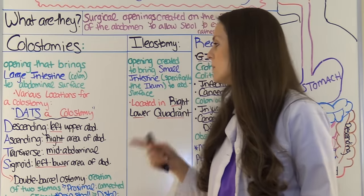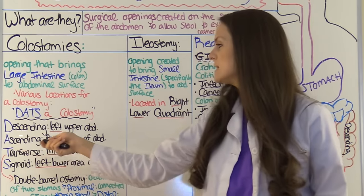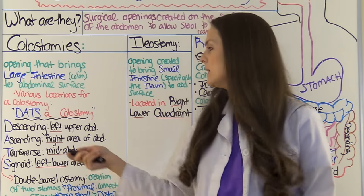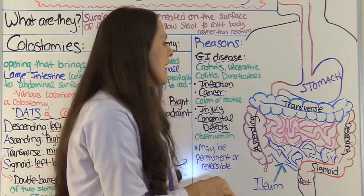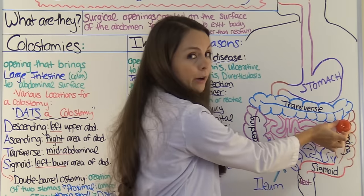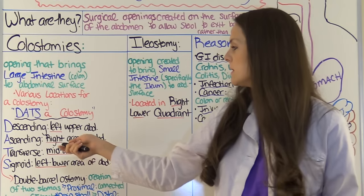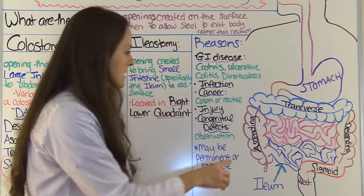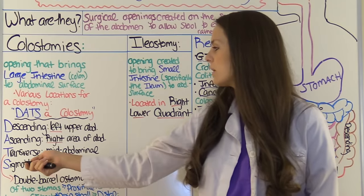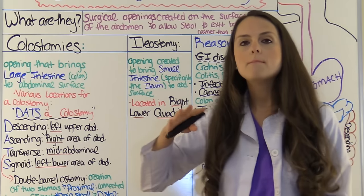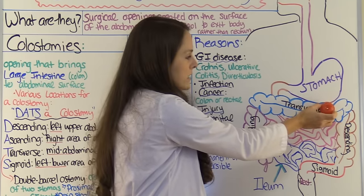To help you remember the different types, use the mnemonic DATS — that's for colostomy. D is for descending: when you have a descending colostomy, it will be located in the left upper abdomen. A is for ascending: you can expect an ascending colostomy to be on the right area of the abdomen. T is for transverse: you can expect a transverse colostomy about mid-abdominal where the transverse colon is.